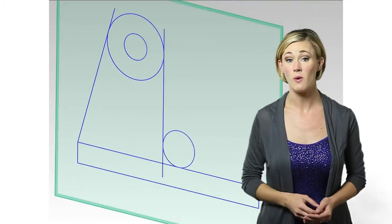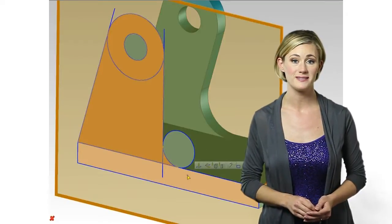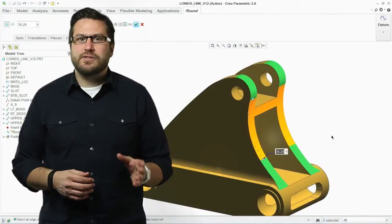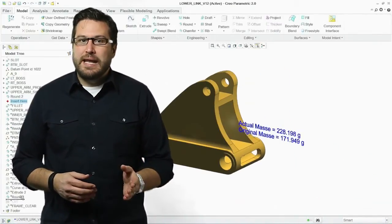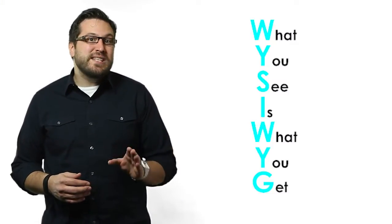Before we get into a discussion of why direct modeling is useful, it might be helpful to understand what it is. Put simply, direct modeling is a CAD method that allows designers to interact directly with the geometry of a model, manipulating it by pushing, pulling, or changing it in a WYSIWYG manner.